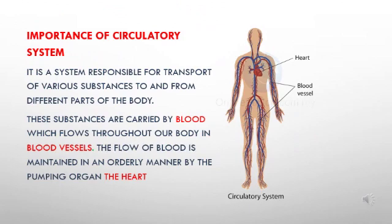The circulatory system is a system responsible for transport of various substances to and from different parts of the body. These substances are carried by blood which flows throughout our body in blood vessels, and the flow of the blood is maintained in an orderly manner by the pumping organ called the heart.